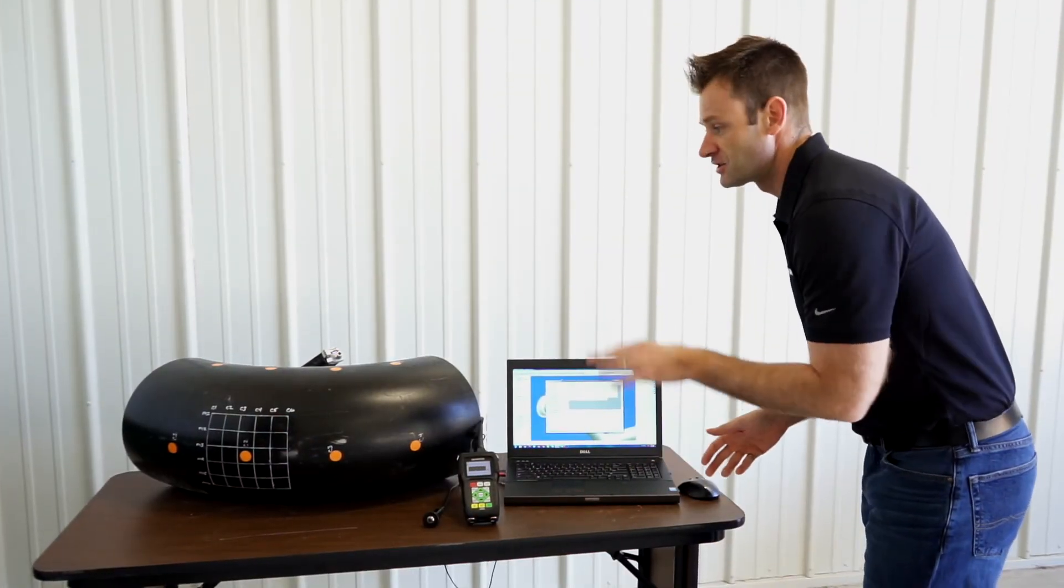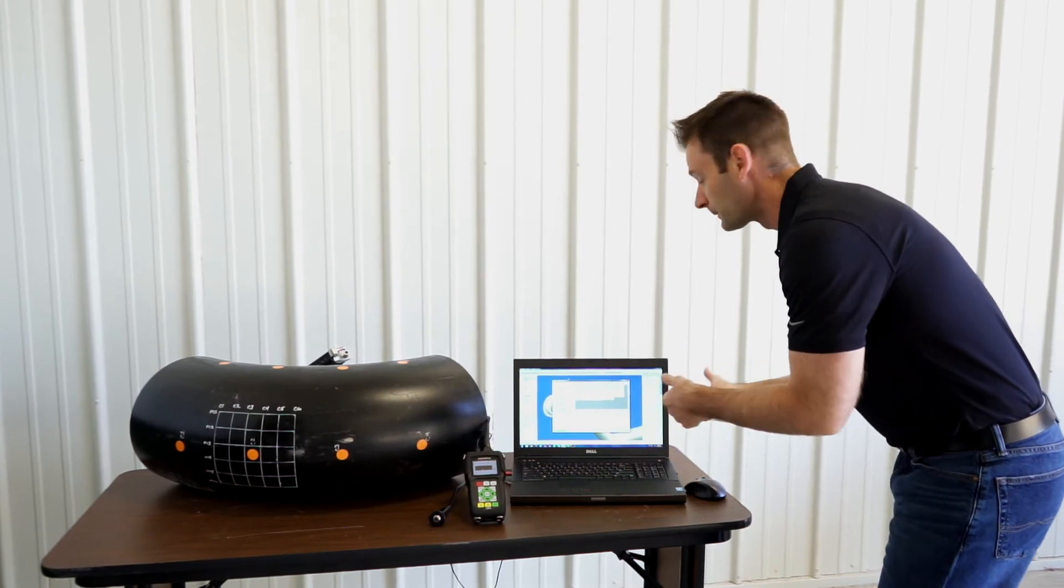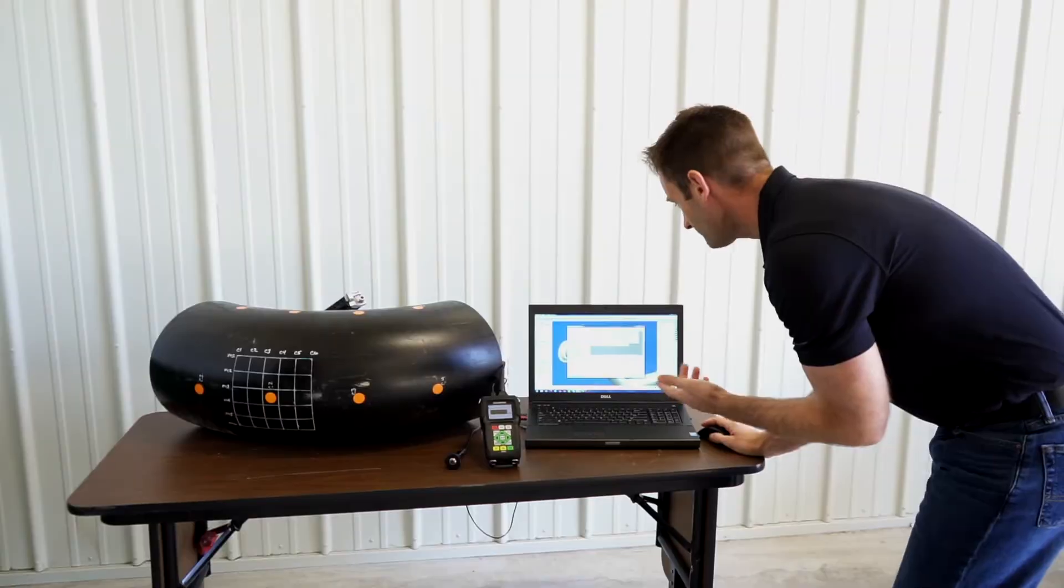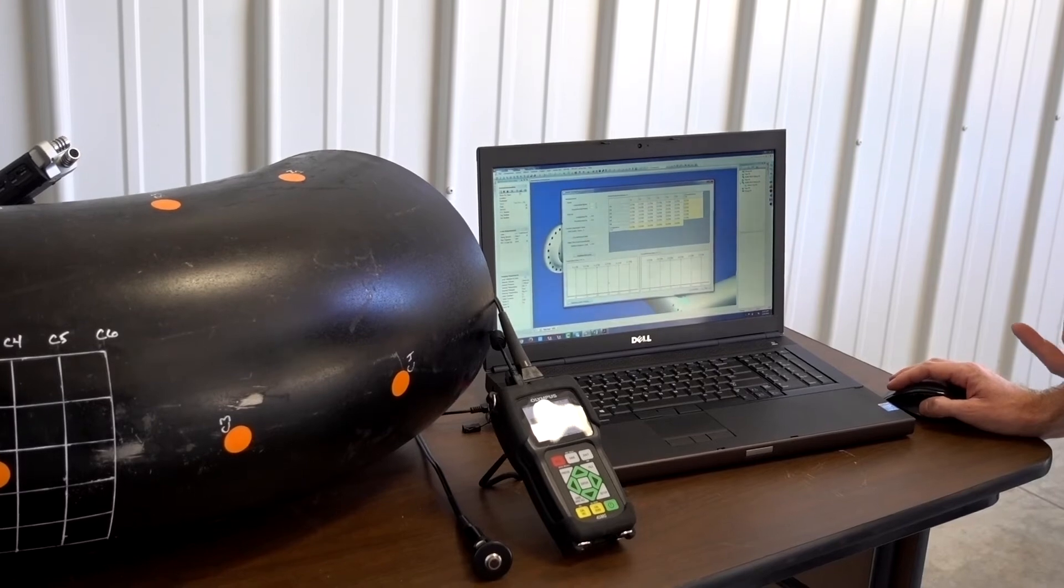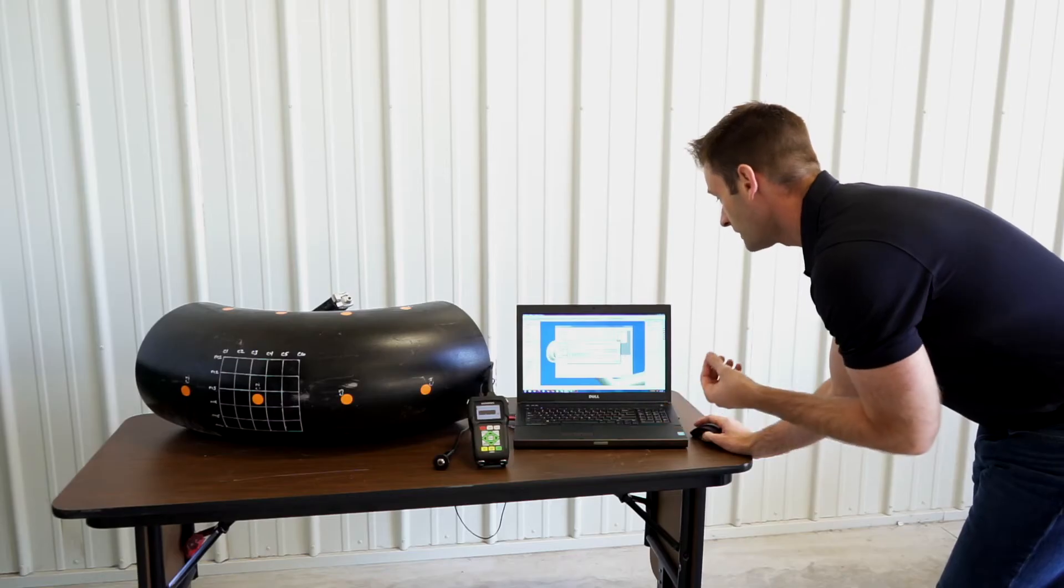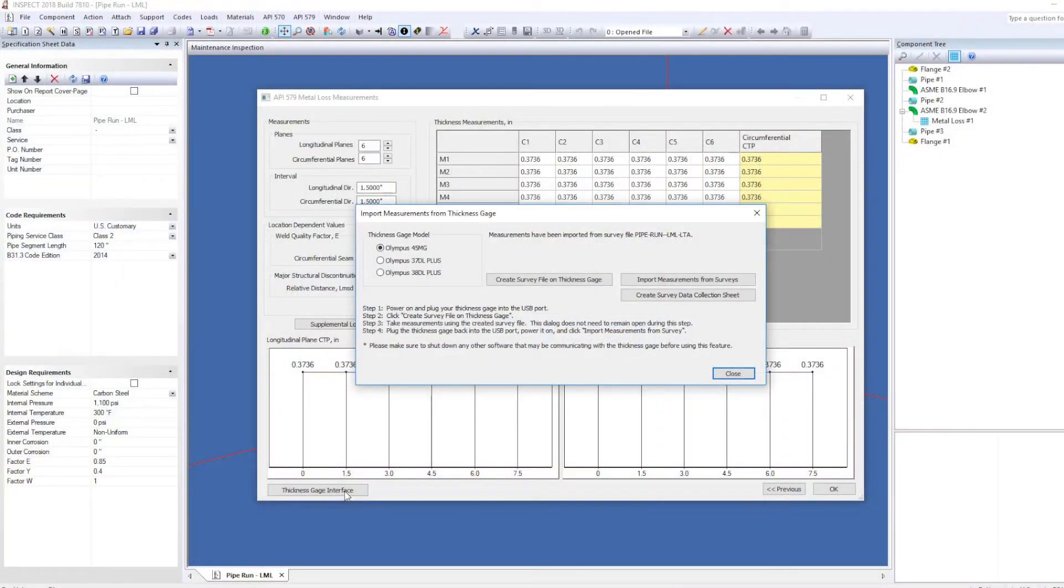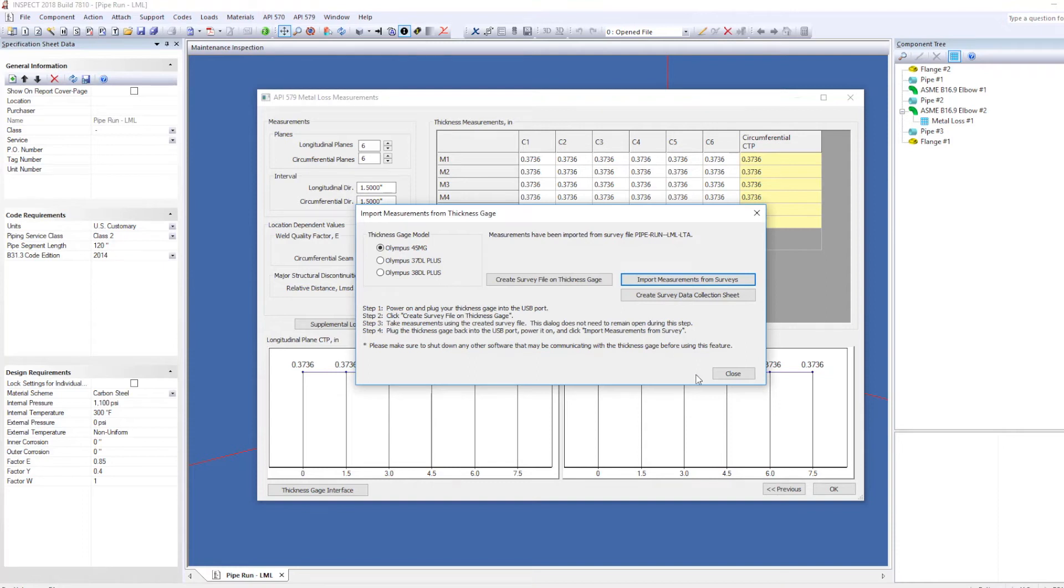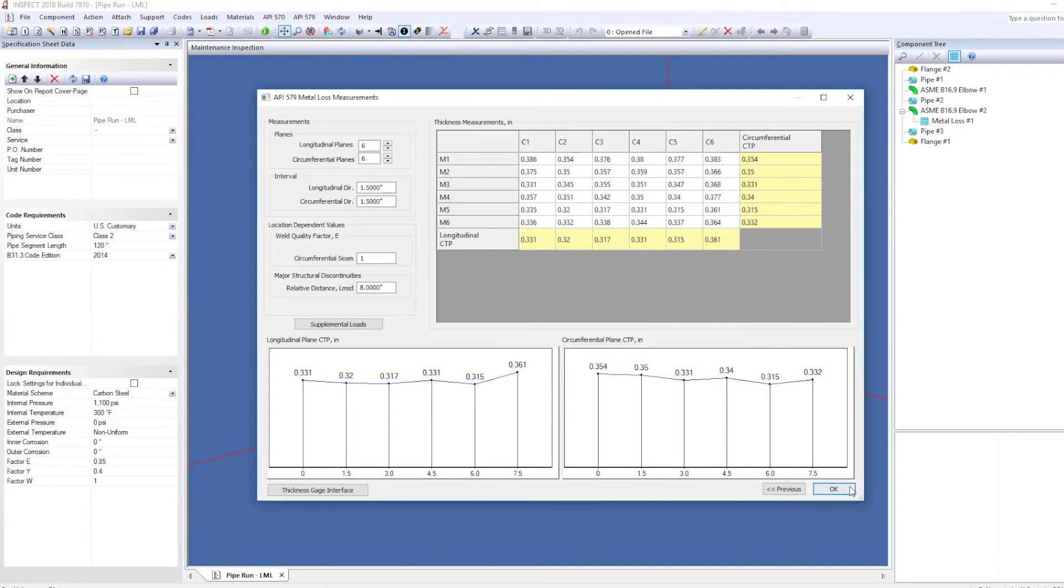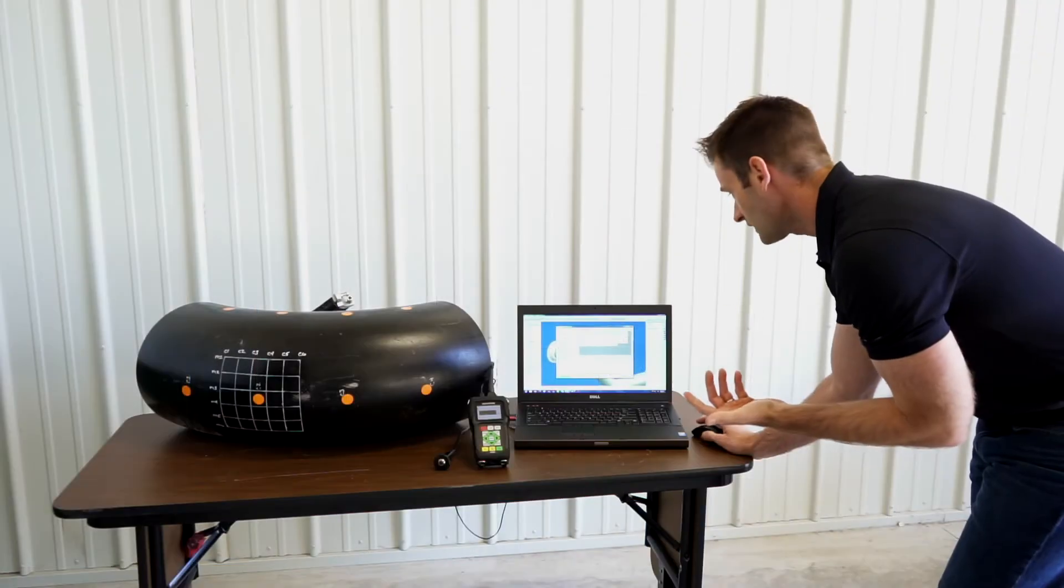So we just finished taking the measurements on the grid. Now what we're going to do is I'm going to import it back into inspect. So I plugged the thickness gauge back into the computer. And I brought up my screen again that you saw earlier how I created the survey. So again I'm going to click on the thickness gauge interface button right here. And this time I'm going to click the button import measurements from survey. And again inspect is going to communicate with the device. And it's asking us would you like to delete the imported files. I'm going to keep it because I want to keep this data on here. And click close. And as you can see on the screen the measurements have now come in. And we can run the assessment.